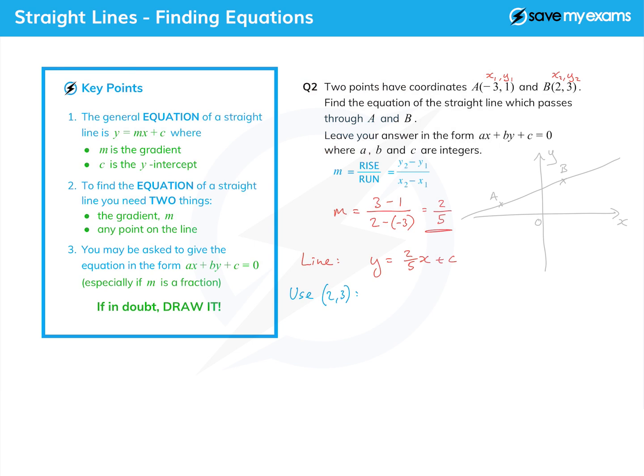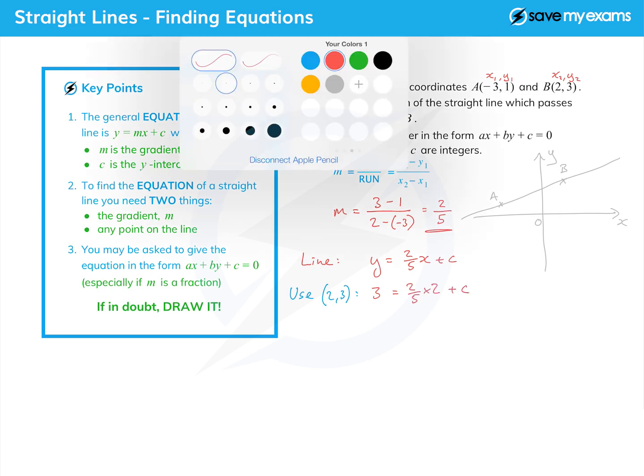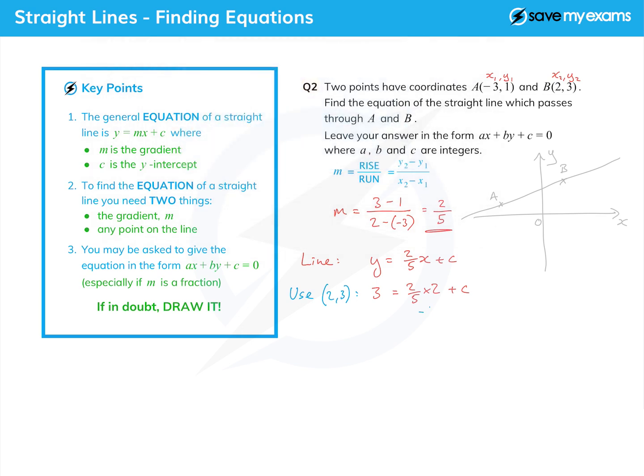So y is 3, x is 2, so that's 2/5 times 2 plus c. To get c on its own, I'm going to subtract 4/5 from both sides.